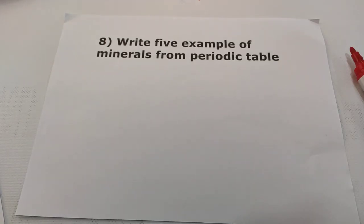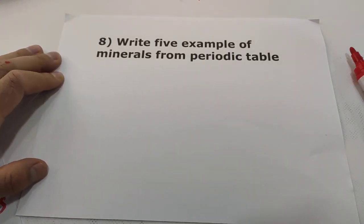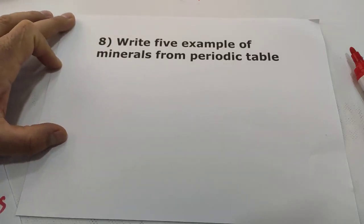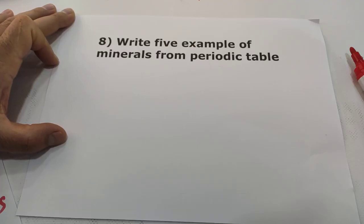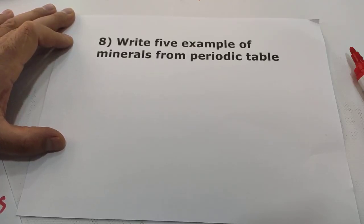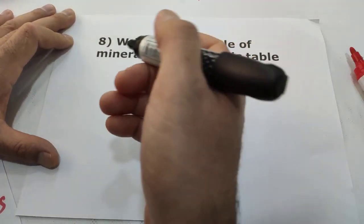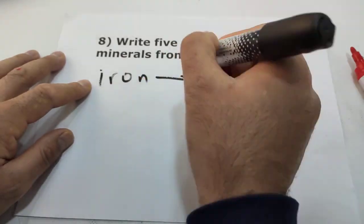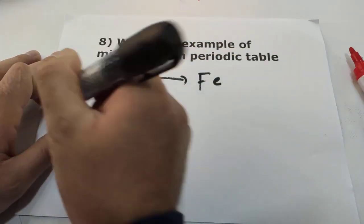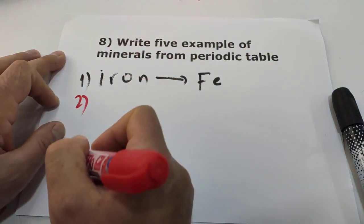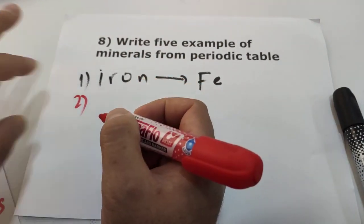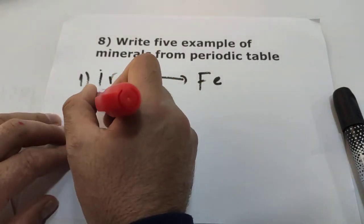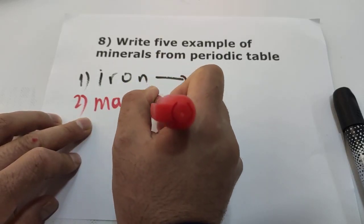Question eight: write five examples of minerals from the periodic table. There are 118 elements in the periodic table, but to be a mineral, the element must be solid, naturally occurring, and have a crystalline shape. First example: iron — iron is a mineral. Second example: magnesium — magnesium is a mineral.